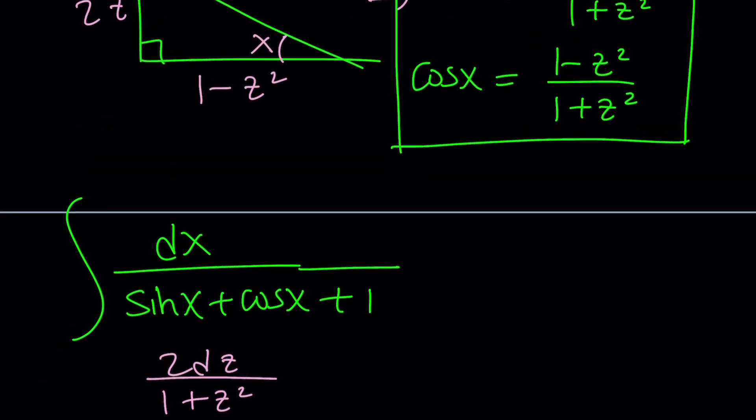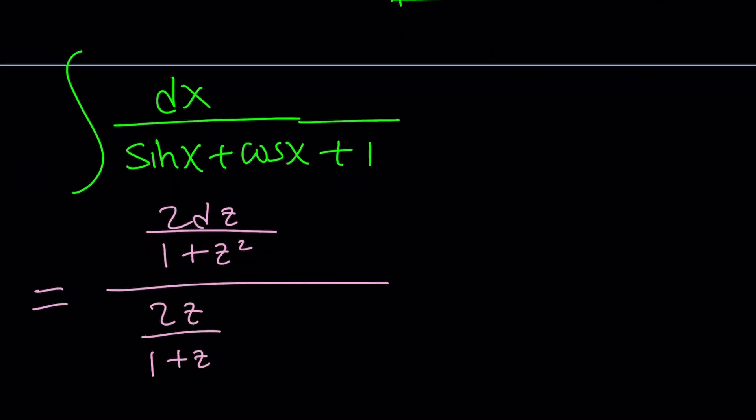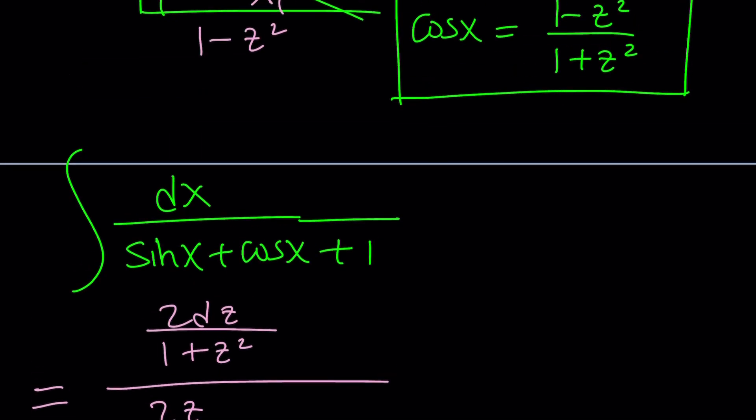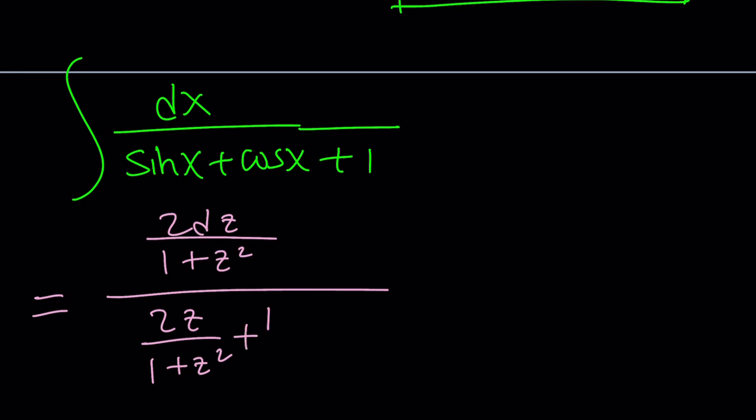And then at the bottom, we're going to have sine x, which is 2z over 1 plus z squared. Now, by the way, notice the similarity between dx and sine x. They're very close, right? Great. And then cosine x is 1 minus z squared over 1 plus z squared, and then plus 1. Awesome. And then, of course, we're going to integrate it.